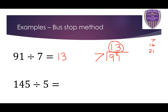145 divided by 5. Once again, I draw my bus stop — 145. How many 5s are in 1? Well, there are no 5s in 1 because 5 is bigger than 1, so write 0. And that number under the bus stop is going to be a remainder, so we take remainder 1 over. How many 5s are in 14? There are two 5s in 10, so there's going to be 2 in there, but there's going to be a remainder 4. We take the remainder 4 over. How many 5s are in 45? Go through your times table and you should find there are nine 5s in 45. There are no remainders, so our final answer is 29.